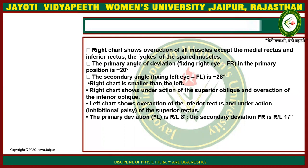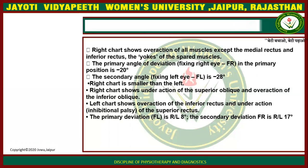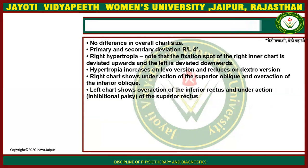The primary angle of deviation fixing the right eye is plus 20 degrees in primary position, and the secondary angle fixing the left eye is minus 20 degrees. In another case, the right chart is smaller than the left: the right chart shows under-action of the superior oblique and over-action of the inferior oblique; the left chart shows over-action of the inferior rectus and under-action of the superior rectus. The primary deviation is right oblique palsy at 8 degrees.